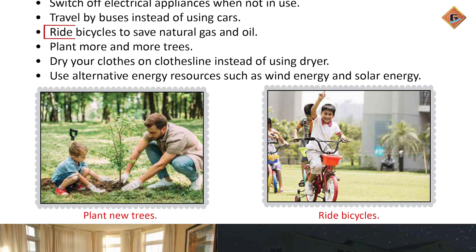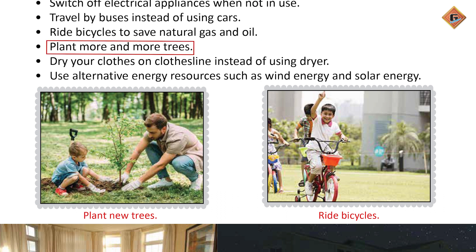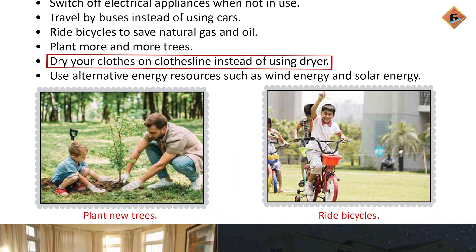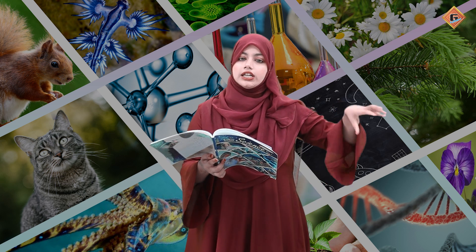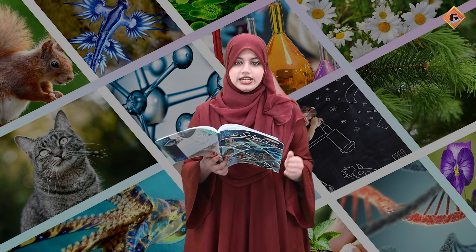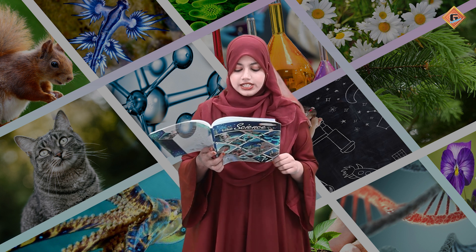We can also use bicycles to save natural gas and oil. Most importantly, plant as many trees as possible so that our air can become clean and our pollution can decrease. Also, dry your clothes on a clothes line instead of using a dryer. Try to dry your clothes on a line using sunlight.